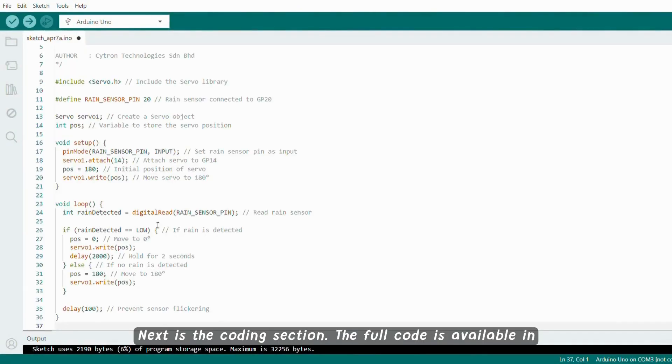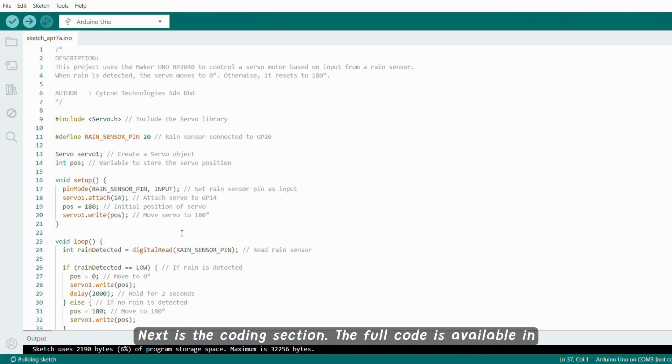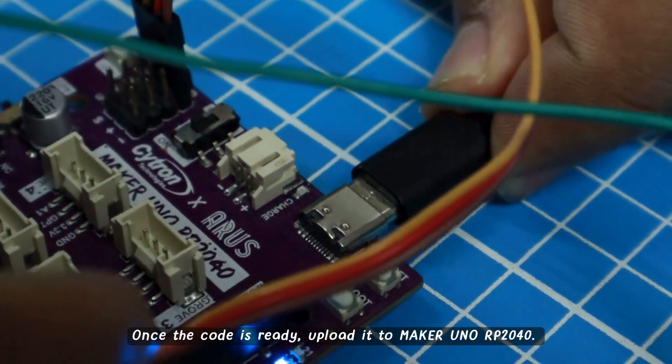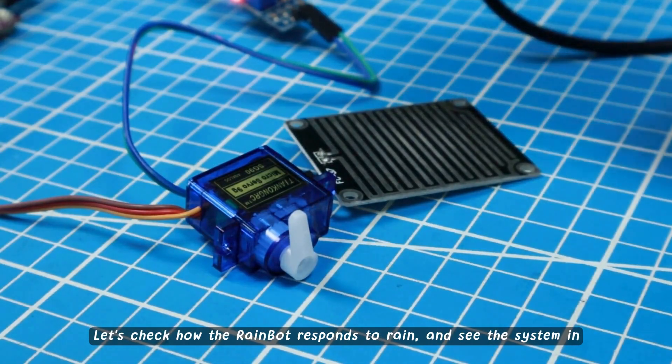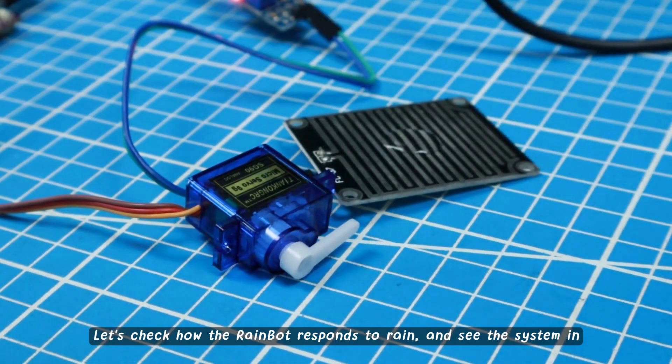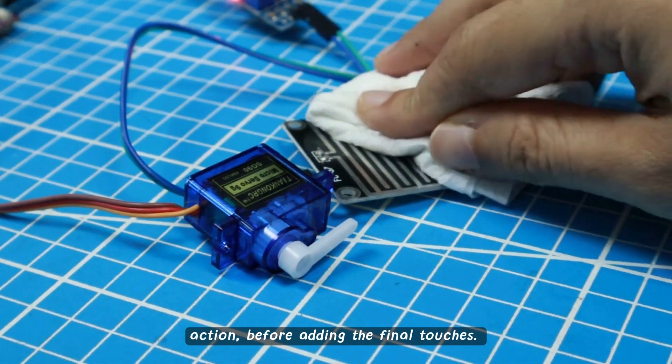Next is the coding section. The full code is available in the tutorial link in the description below. Once the code is ready, upload it to the Maker UNO RP2040. Let's check how the rainbot responds to rain and see the system in action before adding the final touches.